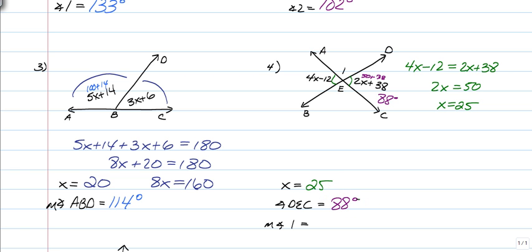So to find the measure of angle 1, now we're rewinding to the previous example and using a linear pair. So AC is a straight line. So if this is 88 degrees and we have a linear pair here, we have to subtract that from 180 to find out that the measure of angle 1 is 92 degrees. Alright, again, if you got that right, great job.